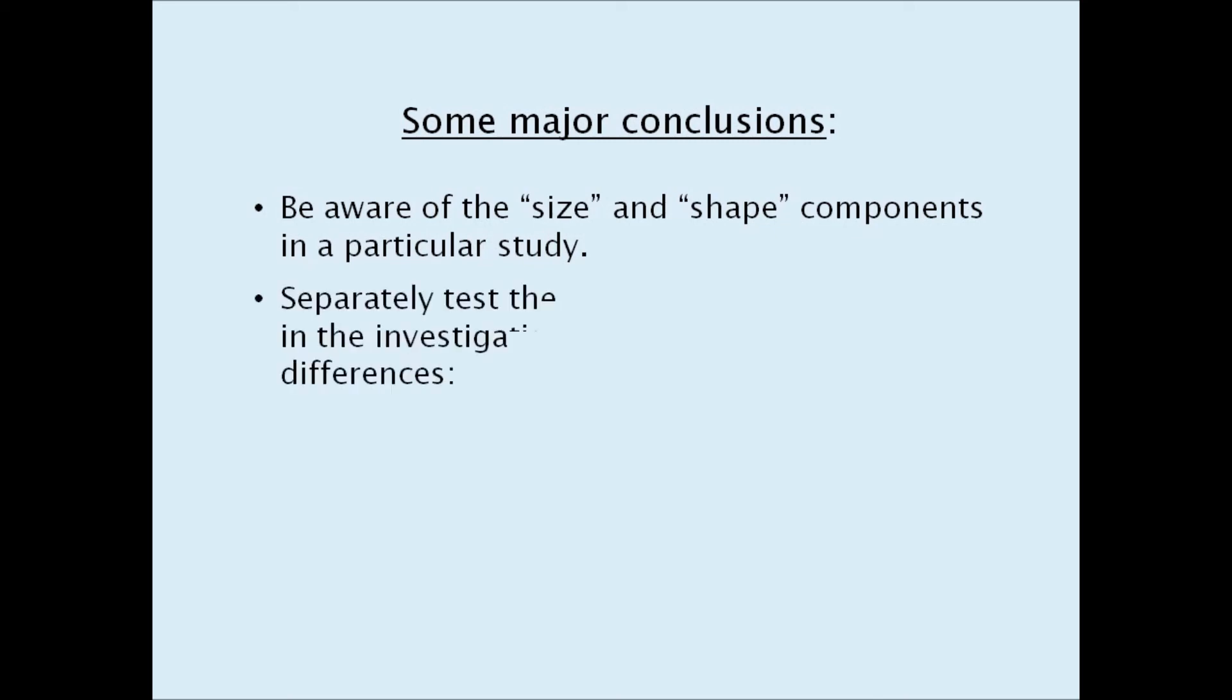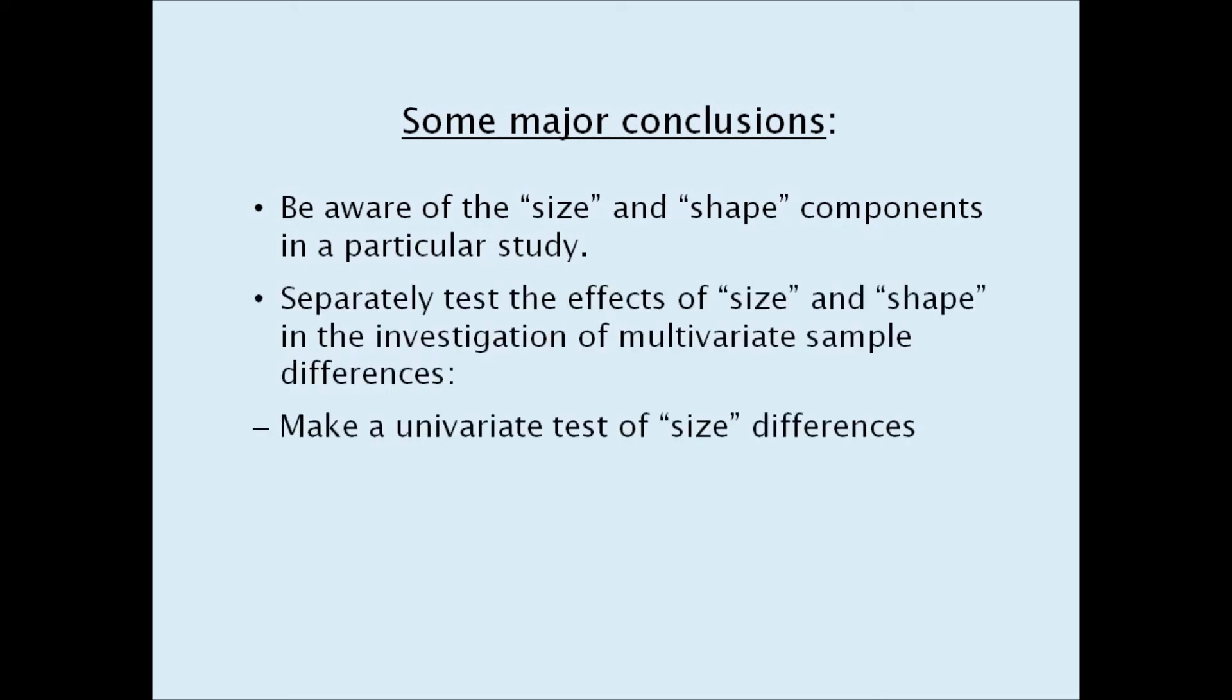Some of the major conclusions of my article are that one should be aware of the size and shape components in a particular study. I would recommend that you test the effects of size and shape separately in your investigation of multivariate differences between your samples. That is, perform a univariate test of size differences and separately, using a distance measure such as chi-square or Hellinger, which operate strictly on relative values, perform a multivariate test of shape differences.